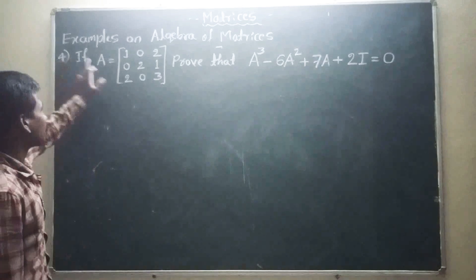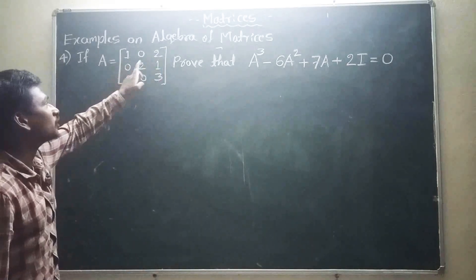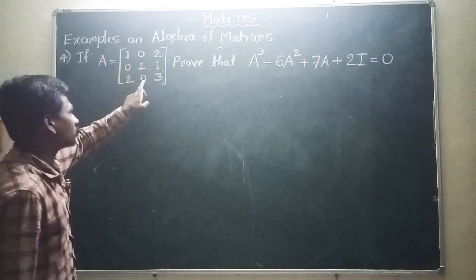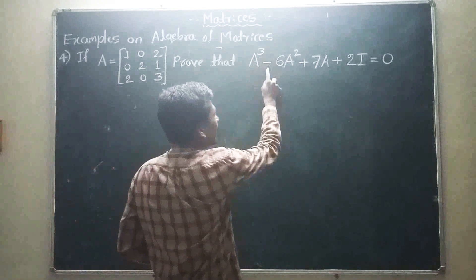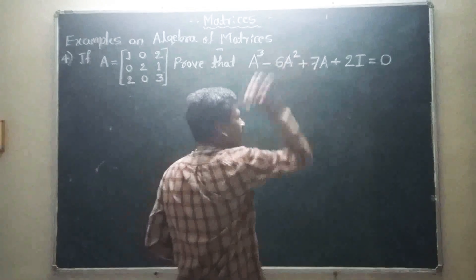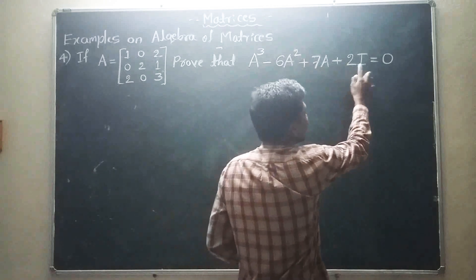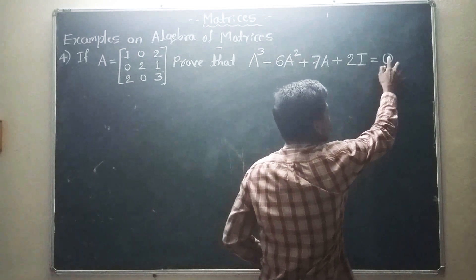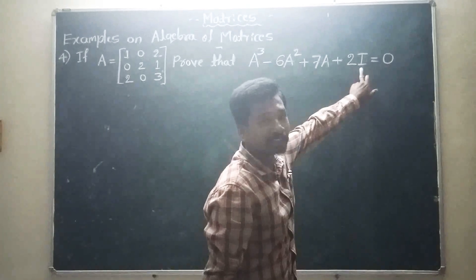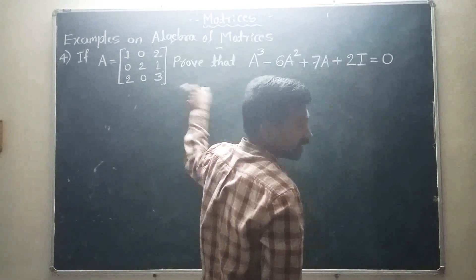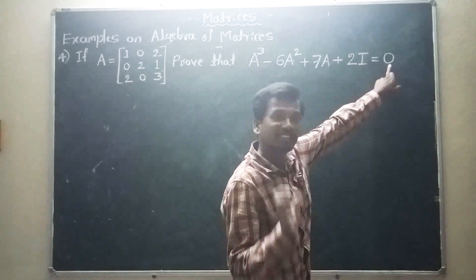Example number 4: If A is equal to the matrix 1, 0, 2, 0, 2, 1, 2, 0, 3, then prove that A cube minus 6 into A square plus 7 into A plus 2 into I is equal to 0, where I is the identity matrix of order 3 cross 3 and 0 is the zero matrix of order 3 cross 3.